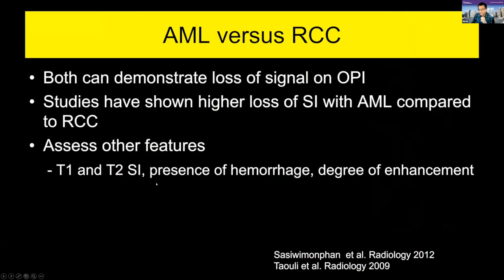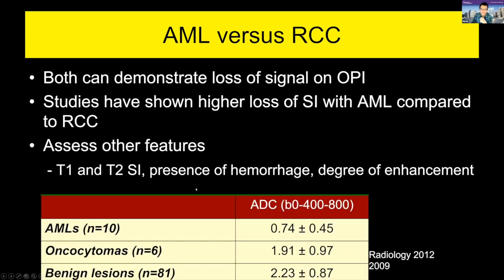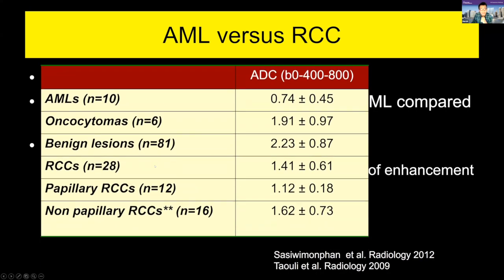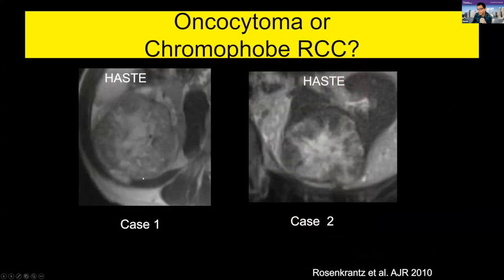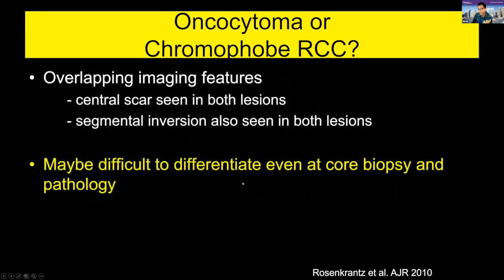Both angiomyolipoma and renal cancers can demonstrate signal loss on out-of-phase images. With heterogeneous T2 signal, a lesion is more likely renal cancer; if homogeneously iso-intense or hypo-intense, it's likely angiomyolipoma. Haemorrhage and heterogeneous enhancement are more common in renal cell cancer. Diffusion imaging might help — studies have shown angiomyolipoma tends to have lower ADC compared to other subtypes of kidney cancer. Oncocytoma and chromophobe renal cell cancer have overlapping imaging features, and even biopsy can sometimes be difficult to differentiate between these two entities.